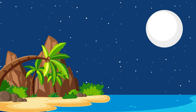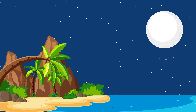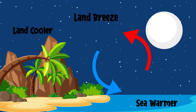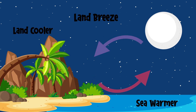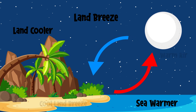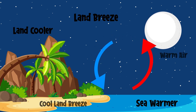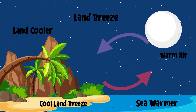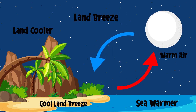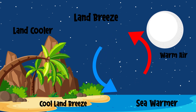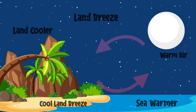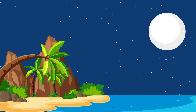A land breeze is a wind that blows from the land towards the sea. It is caused by the difference in temperature between the land and sea, with the land cooling down faster than the sea at night. This creates a high pressure zone over the land, causing the warmer air over the sea to flow towards the land.